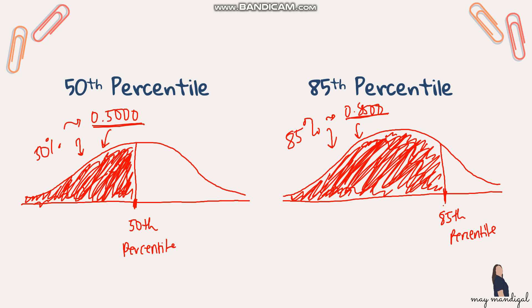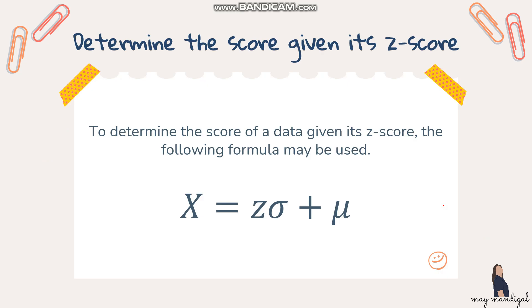To convert a z-score into its corresponding raw score, we use the formula: x = z times the standard deviation plus the mean. This formula comes from the z-score formula x minus the mean all over the standard deviation, rearranged algebraically. The x value from this formula gives us the location of our percentile.